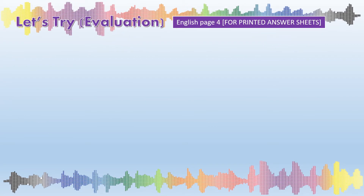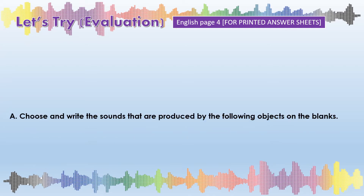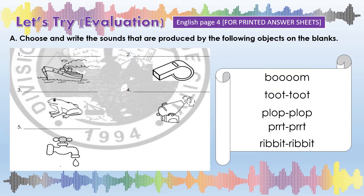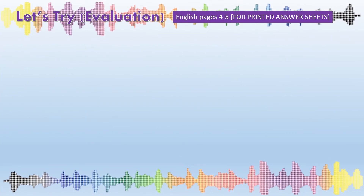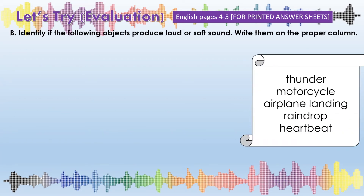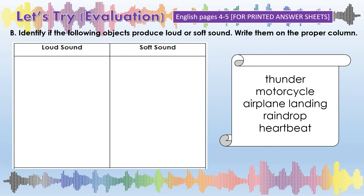Now, let's try to identify the sounds of animals, objects, and transportation on page 4 of our English module. For those who will use printed answer sheets, please choose and write the sounds that are produced by the following objects on the blanks. After that, let's identify if the following objects produce loud or soft sound. Write them on the proper column.